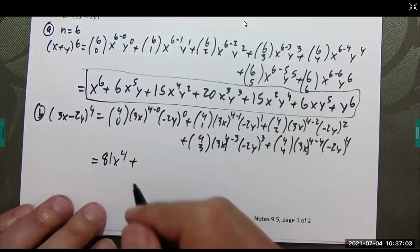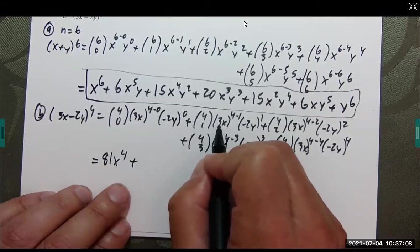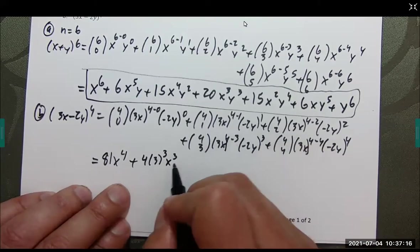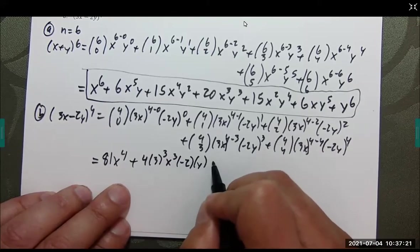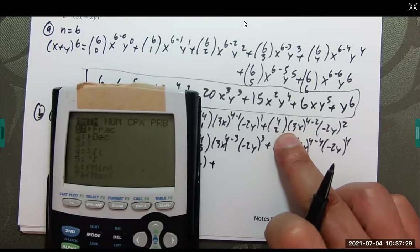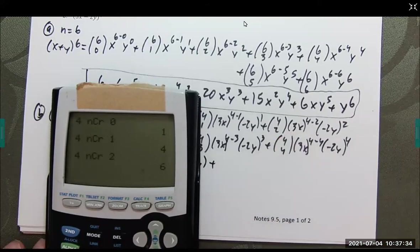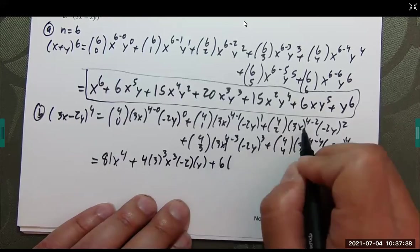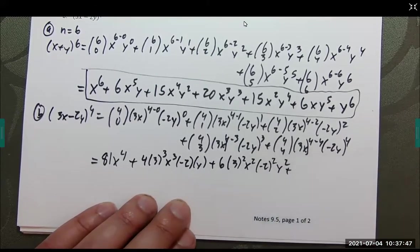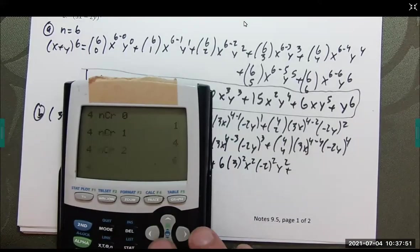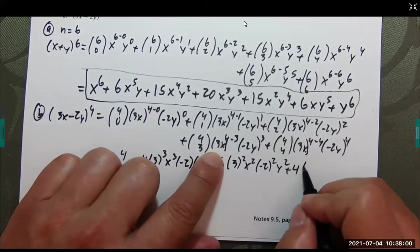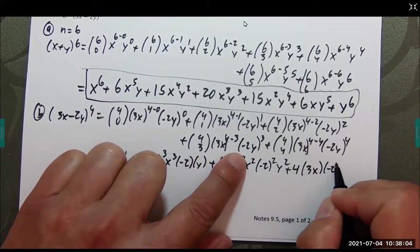Now, that goes to 1 as well. Now, this is 3x to the fourth power. 3 to the fourth power is 81. That again goes to 1. 4 choose 1 is 4. So, that's going to be 4. That's 3 to the third power. That's negative 2 times y. We'll clear all that up here in just a second. Next up, we're here. 4 choose 2, 6, so this becomes 6, 3 to the second power, 9, x squared, negative 2 squared, y squared. Plus, 4 choose 3.